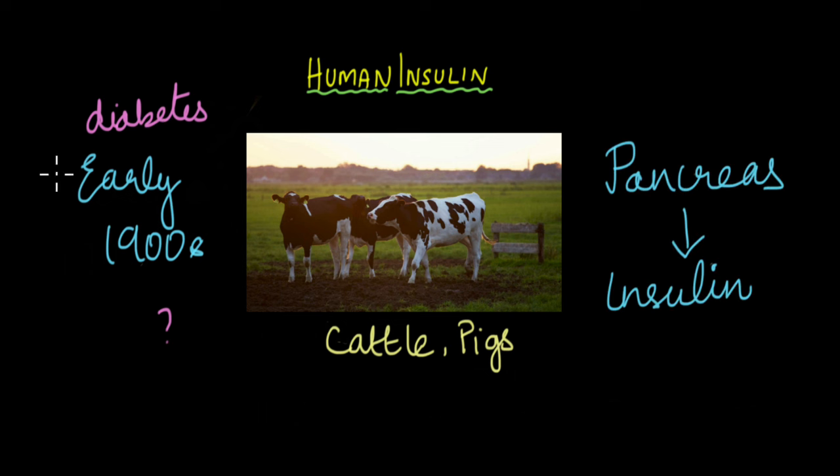You see, scientists were using the insulin extracted from these animals to treat humans. They realized that the pancreas was the organ that was producing this insulin. So they were growing these animals in large scale levels.